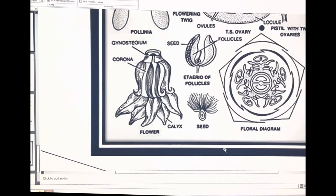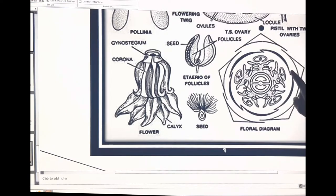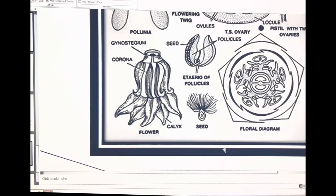Sepals are 5 in number — gamosepalous. These sepals are free; there is no fusion. Petals are also 5 in number, 1, 2, 3, 4, 5. These petals are gamopetalous and fused with themselves, and also fused with the stamens. That phenomenon is known as epipetalous — the stamens are adnate to the petals.